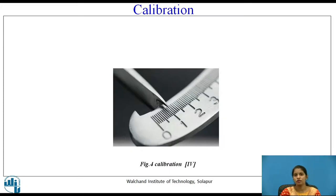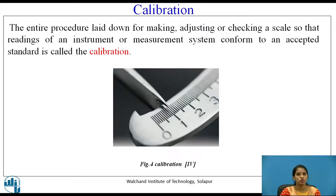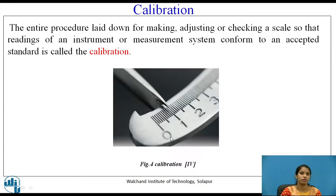Calibration is comparing measurements with standards. The entire procedure laid down for making, adjusting, or checking a scale so that readings of an instrument or measurement system conform to an accepted standard is called calibration. Figure 4 shows calibration. Instruments need to be calibrated at equal intervals of time so that the readings given by the instruments are accurate.